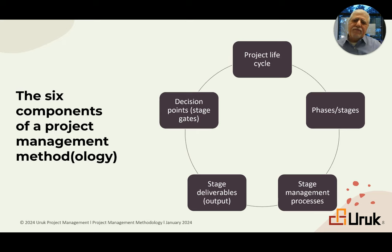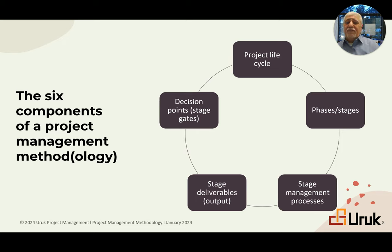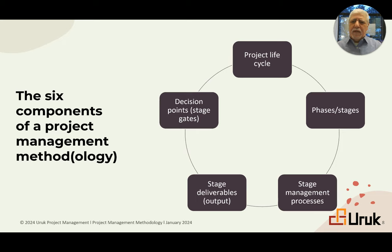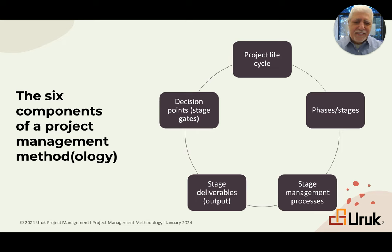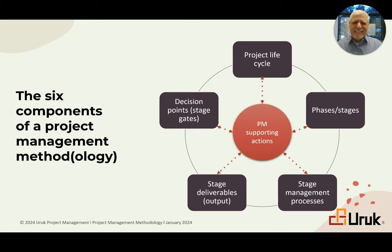Each phase or stage of the life cycle focuses on something specific. Because we break the project life cycle into stages, we need to manage each stage — that's what we call stage management processes. Every stage must then deliver an output: a product or result of that stage. That output must go through a decision point, which we call a stage gate. Those are five of the six components.